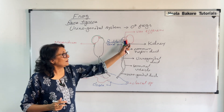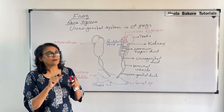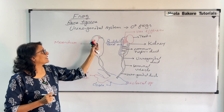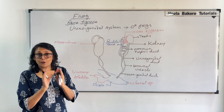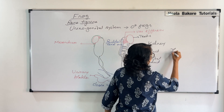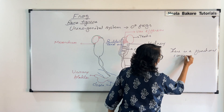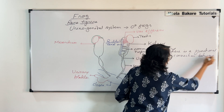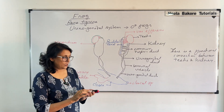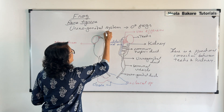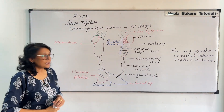There is a connection between the testis and the kidney — a common cover. The mesentery, the membranous fold which attaches the testis to the kidney, is known as the mesorchium. Here also we will see those fat bodies. Fat bodies are going to be visible whenever we are looking at the kidneys. This is how the urinogenital system appears and functions.